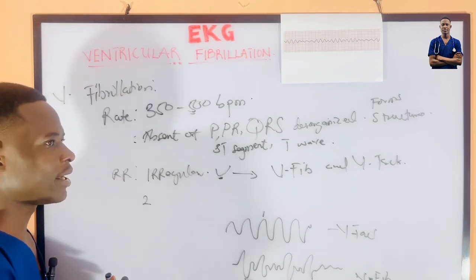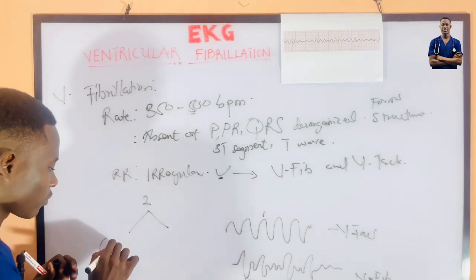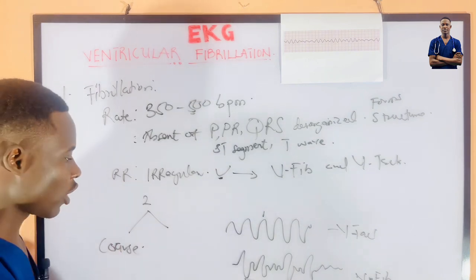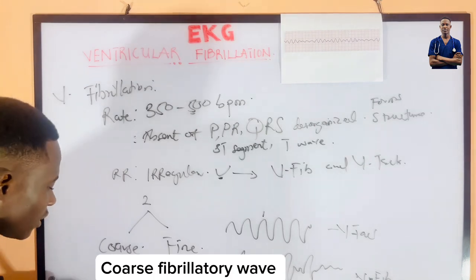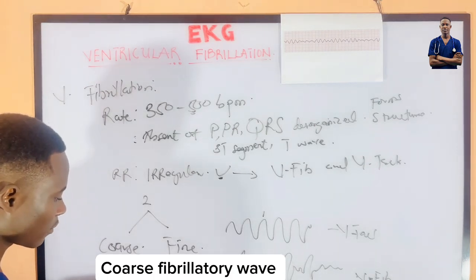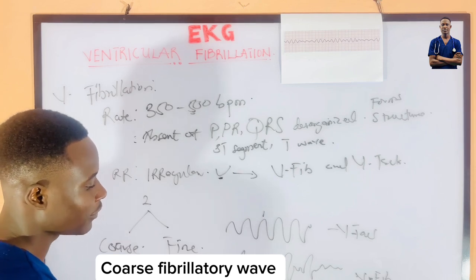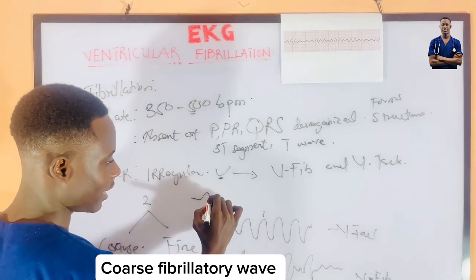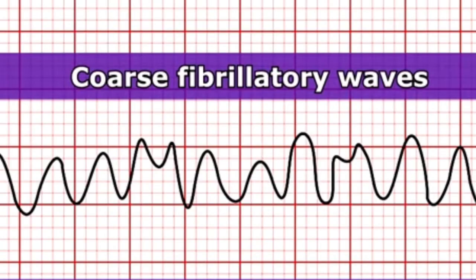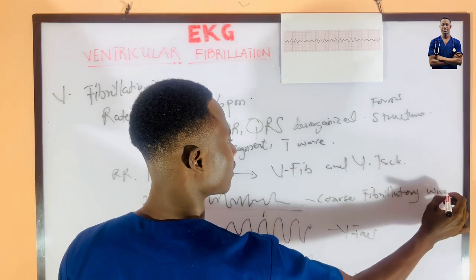There are two main forms in which you can see V-Fib. V-Fib can be in the form of a coarse or a fine fibrillatory wave. For the coarse fibrillatory wave, the waves are formed with larger, more pronounced deflections — those are the coarse fibrillatory waves of V-Fib.